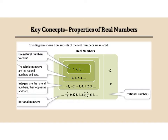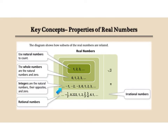Here's the diagram of real numbers. Real numbers are basically all the numbers that we know. They are the natural numbers, or counting numbers — that's what we learned in kindergarten. If you add zero to natural numbers, they become whole numbers. If you add negative numbers, they become integers. And then when you add fractions and decimals, they become rational numbers.